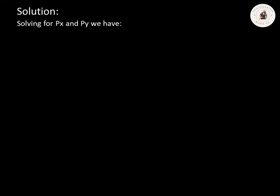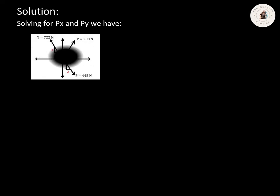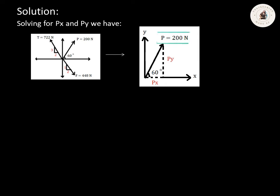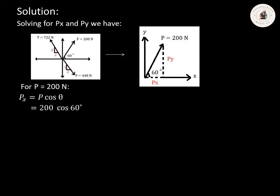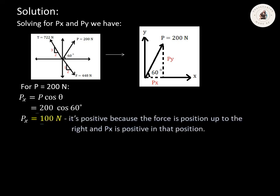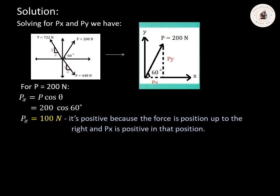Next, we're going to solve for PX and PY. We need to focus on force P which is equivalent to 200 Newton inclined at an angle of 60 degrees. To solve for PX: as you can see, PX is at the adjacent side. So PX equals P multiplied by cosine theta. P is 200 Newton and theta is 60 degrees, so PX equals 200 multiplied by cosine 60 degrees. Using our calculator, PX equals 100 Newton. The sign convention is positive because the force is positioned up to the right.